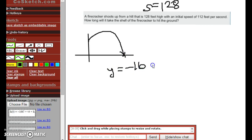y = -16x² plus vx plus s. Our initial height s is 128, our initial speed is 112 feet per second. So we're going to plug this in right here. y = -16x² plus our initial speed, which is 112x, plus our initial height of 128 feet.